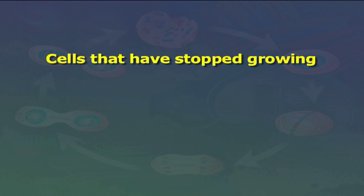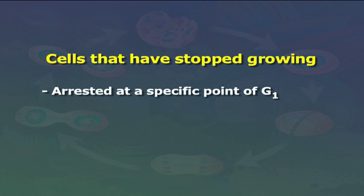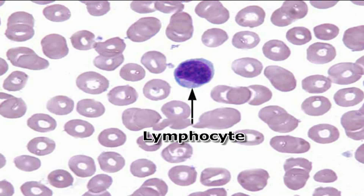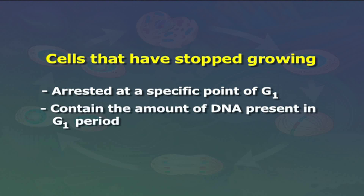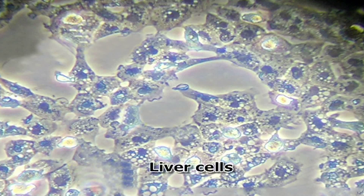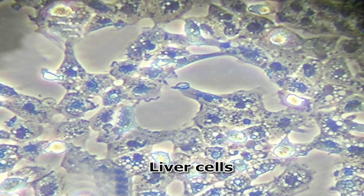A cell may remain in G1 for days, months, or years. Cells that have stopped growing become arrested at a specific point of G1 — for example, liver cells and lymphocytes — and they contain the DNA amount of the G1 period. These arrested cells can be induced to divide again; for example, liver cells normally neither grow nor divide, but liver damage rapidly induces them to divide.